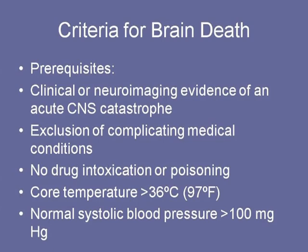A good rule of thumb for normal systolic blood pressure in a child is 70 plus two times age in years. So for a 10-year-old, the normal systolic blood pressure is 90. Remember that formula: 70 plus two times age in years.